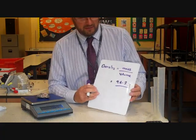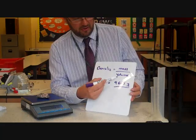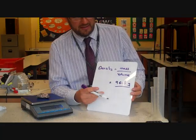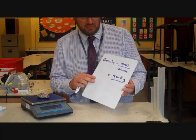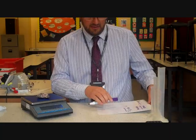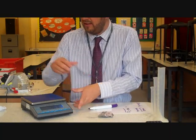Going back to our formula, density is mass divided by volume. We've got the mass — no problems. We've got a problem with the volume, because we've said we can't measure it with a ruler. So we need a slightly different method.